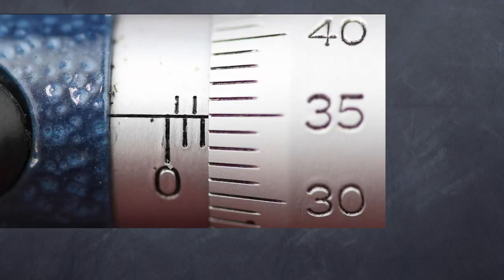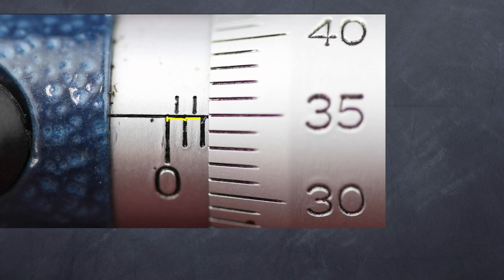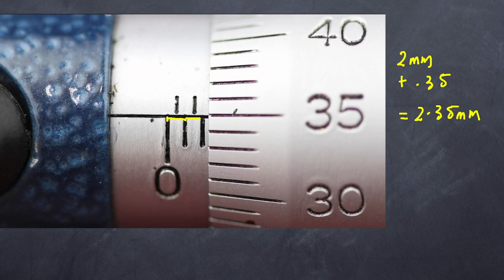Let's practice two examples of how we use the micrometer to work out thickness. In our first example you'll see we start with our zero line — we've got one millimeter and two millimeters. The lines at the top represent the half millimeter positions, but you can see we haven't got another half coming, so this is definitely under 2.5mm. We've got two millimeters plus 0.35 — each hundredth of a millimeter — so as a result we've got 2.35 millimeters.